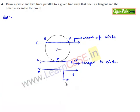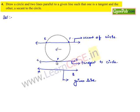Here AB is the given reference line. Therefore, with the given line AB, we have drawn line CD which is tangent to the circle passing through point P, and we have also drawn another line EF parallel to CD which intersects the circle at two points, making it a secant of the circle.